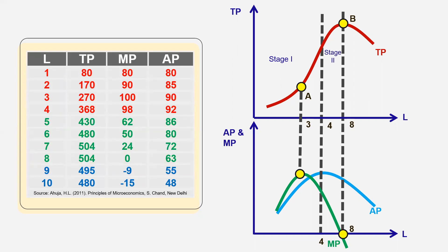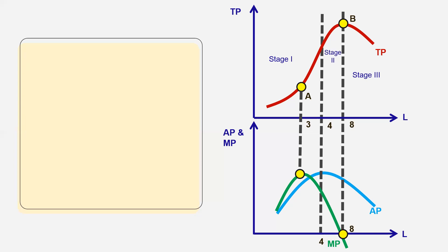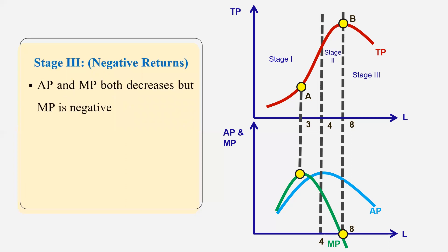Then we have the third stage, in which total production declines. It is represented by blue color in the table — see the last two units of labor. Total production decreases, marginal production is negative, and average production also decreases. This is known as negative returns, in which both average production and marginal production decrease, and marginal production is negative.